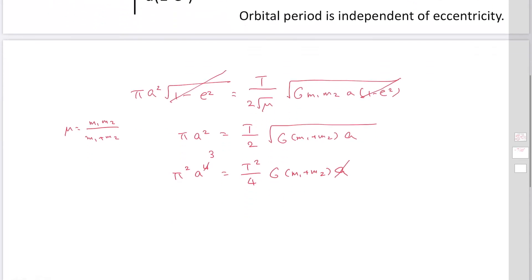So you can find T² is 4π²a³ over G(m₁ + m₂).